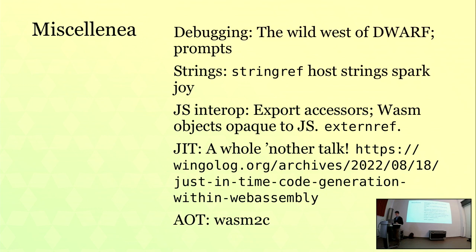A final couple of nerdy points. For some languages, it's important to generate code at runtime. In WebAssembly, there will probably be a proposal for this at some point, but it's not there yet. What you can do now is actually generate bytes for a new WebAssembly module if you need JIT code, then instantiate that module sharing state with your host — I have a blog post on this if you're interested. There's also a WebAssembly-to-C translator, WASM2C, which doesn't work with GC yet but could. For a language that compiles to WebAssembly, this would give you ahead-of-time compilation to any CPU — you don't need to build your RISC-V backend; compile to WebAssembly and use one of these ahead-of-time WASM-to-native compilers.